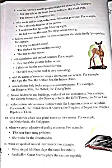Next, rule 13: when we use an adjective of quality as a noun, we will use 'the'. For example: The poor have many problems. Here 'poor' is an adjective of quality, but it is being used as a noun, so we use 'the' before it. And when we speak about a musical instrument, in that case you will also use the definite article 'the'.